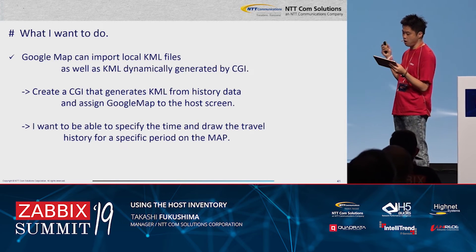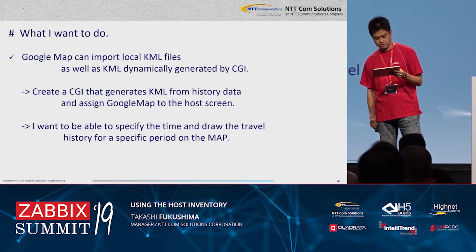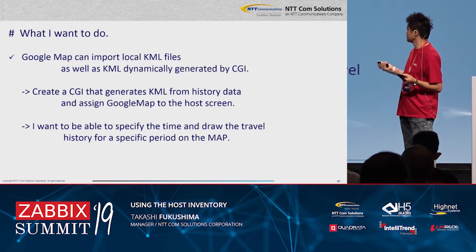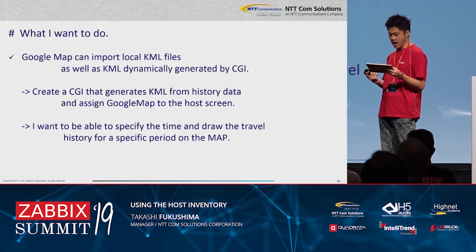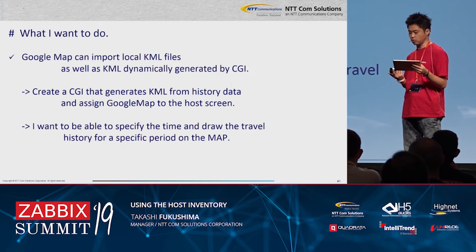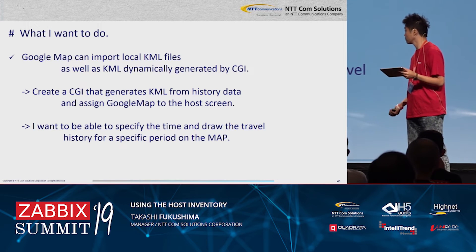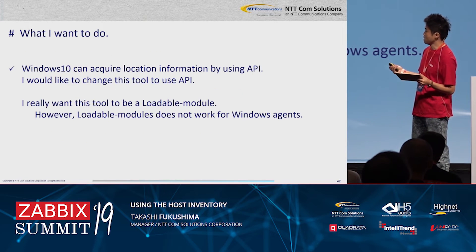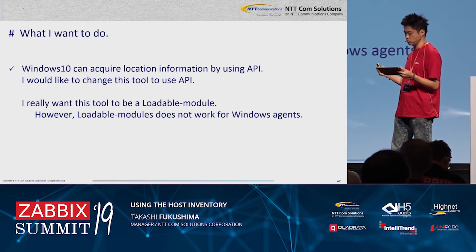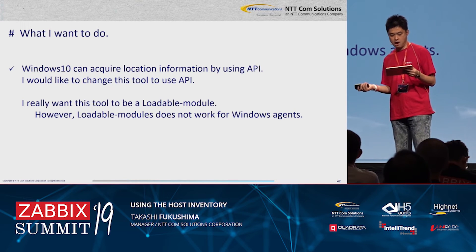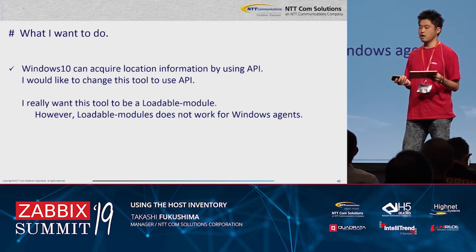What I want to do next: Google Maps can import local KML files as well as KML dynamically generated by CGI. Create a CGI that generates KML from history data and assign Google Maps to the host screen. I want to be able to specify the time and draw the travel history for a specific period on the map. Also, I would like to change this tool to use the Windows 10 API, and make it a loadable module — however, loadable module does not work for the Windows agent.